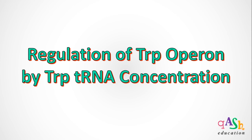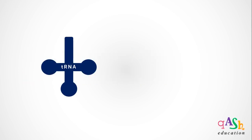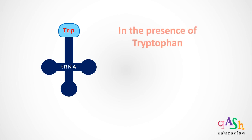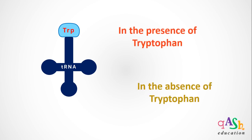In my earlier videos, we have looked at the structure of the tryptophan operon and its regulation by the repressive protein. For the tryptophan operon to be regulated by the trp-tRNA, there is a requirement of tRNA that carries tryptophan amino acid. This regulation is studied in two cases: in the presence of tryptophan and in the absence of tryptophan.